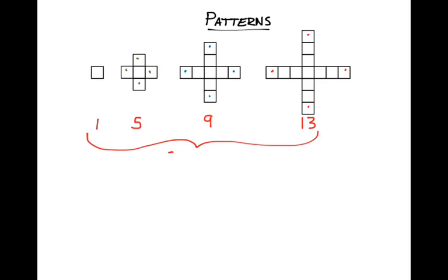All of these things, when you look at them as a whole across all four shapes, are called a sequence. A sequence is really just a pattern of numbers that change from one to the next in some kind of pattern. Each of these different pieces — 1, 5, 9, 13 — are called terms in the sequence.